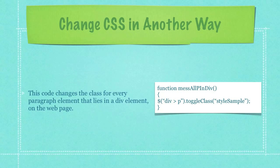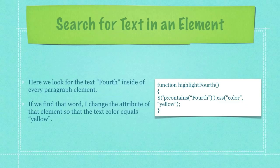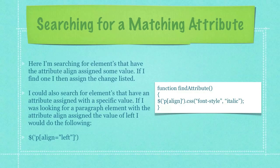Of course you can hit pause or go to newthinktank.com where you can find all this code 100% free. Here we look for the text forth inside of every paragraph element. If we find that word, I change the attribute of that element so that the text color equals yellow.